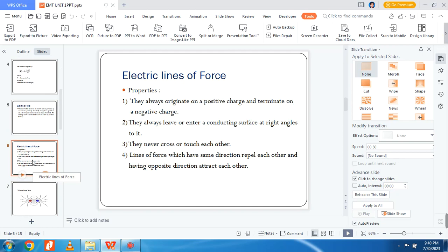Then, electric lines of force. These are the main properties: they always originate on a positive charge and terminate on the negative charge. They always leave or enter a conducting surface at right angles to it. They never cross or touch each other.